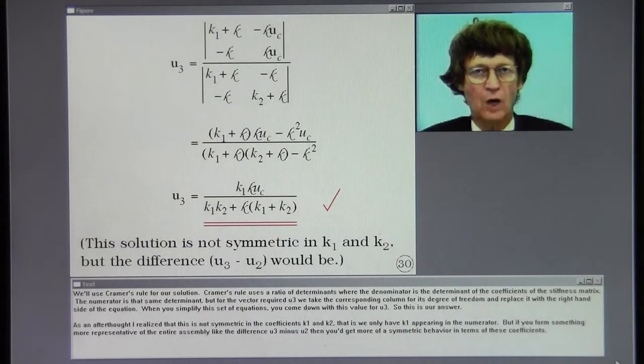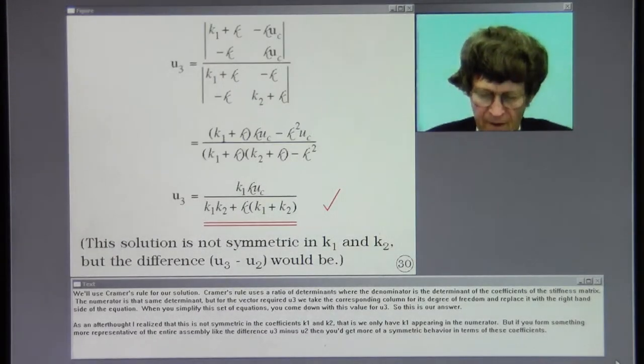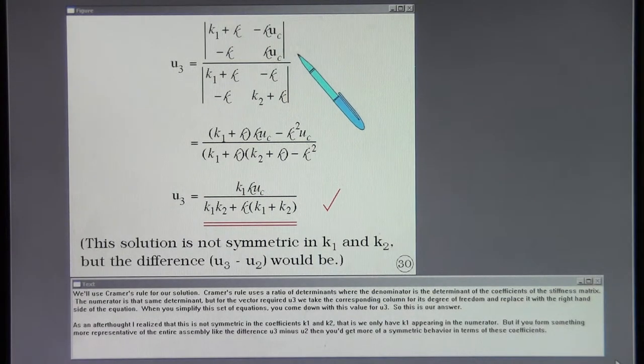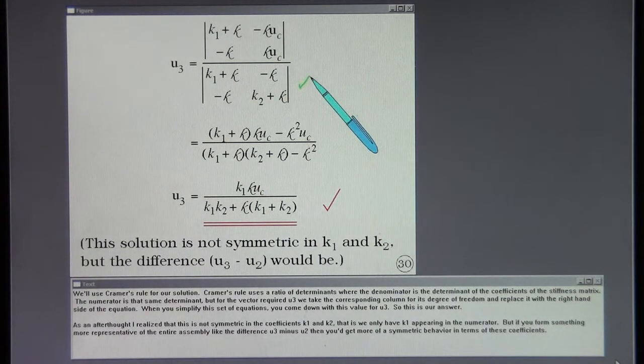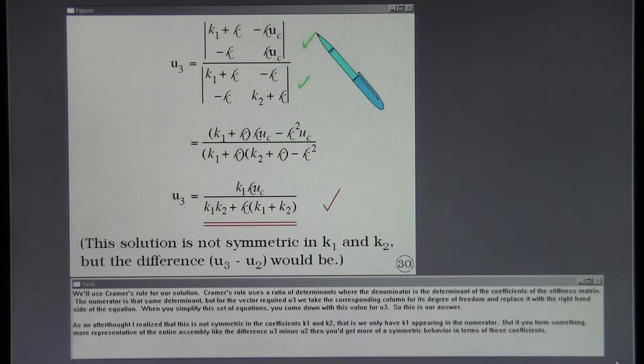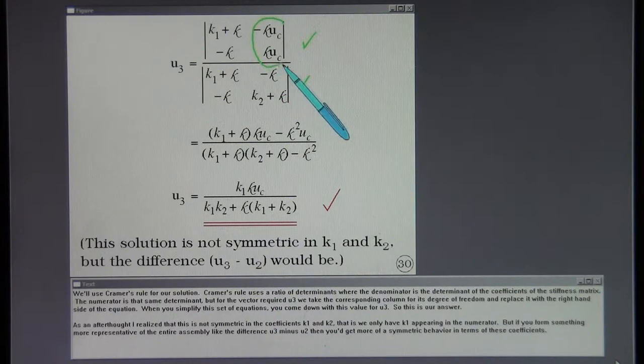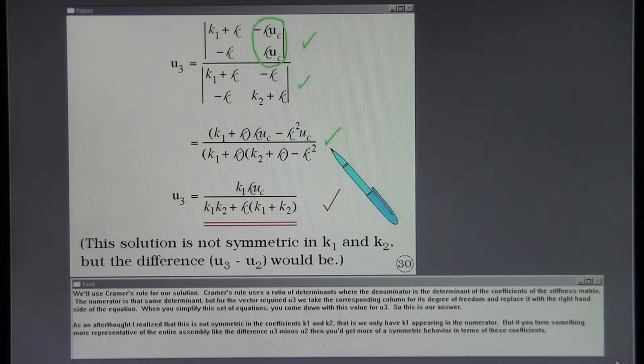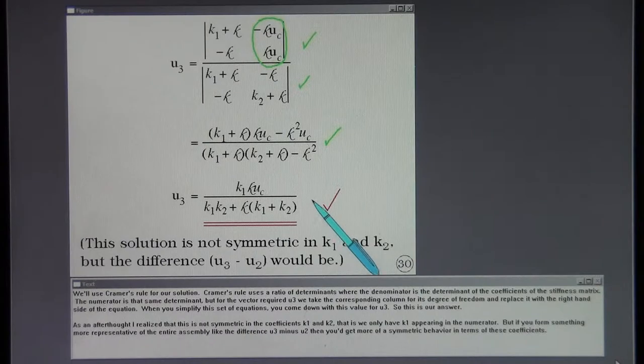We'll use Cramer's rule for our solution. Cramer's rule uses a ratio of determinants where the denominator is the determinant of the coefficients of the stiffness matrix. The numerator is that same determinant but for the vector required U3 we take the corresponding column for its degree of freedom and replace it with the right hand side of the equation. When you simplify this set of equations you come down with this value for U3. So this is our answer.